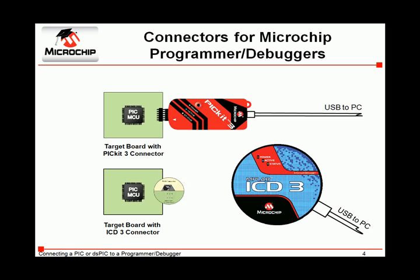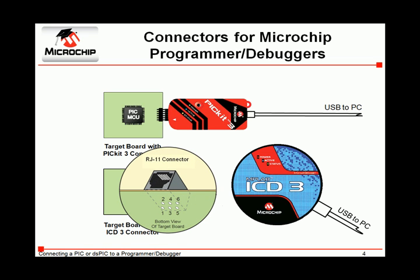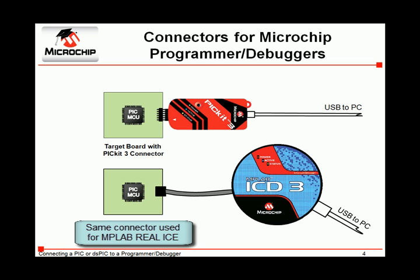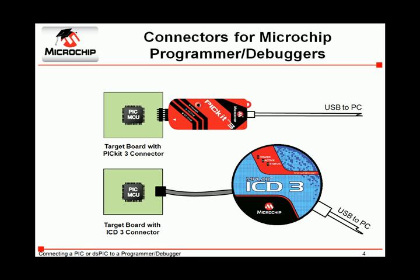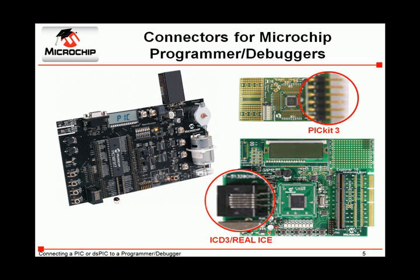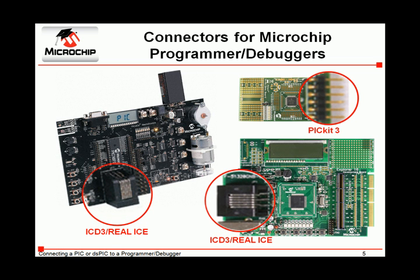The ICD-3, on the other hand, utilizes a common RJ-11 type of connector. Note that the ICD-3 and the MPLAB REAL ICE, shown earlier, connect using the same connector. Most development boards manufactured by Microchip will connect using one of these two connectors, as shown here.